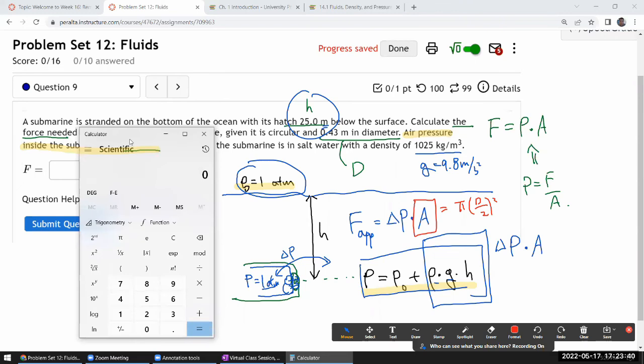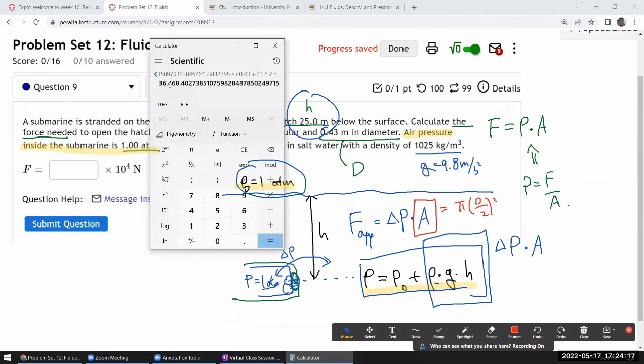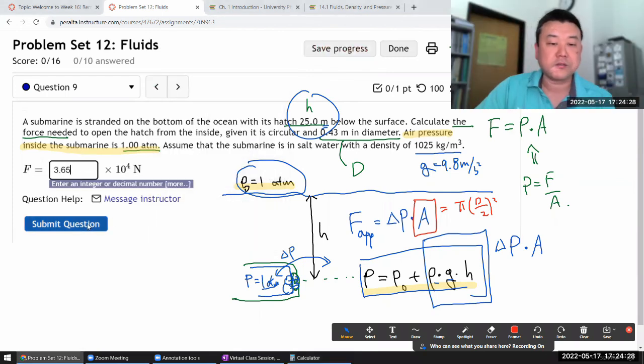I have the density of the seawater. So I'm calculating the difference in pressure first. Density of seawater, 1025 times G, 9.8 times the depth of the water, 25 meters. That's going to give me difference in pressure. I multiply that with the area. Pi times, okay, parentheses, 0.43 divided by 2. So that's r squared equals that. So just eyeballing it here, it's 36,000. So this decimal here is where 10 to the power of 4 is. So it should be 3.65, 3.65 times 10 to the 4 newton.